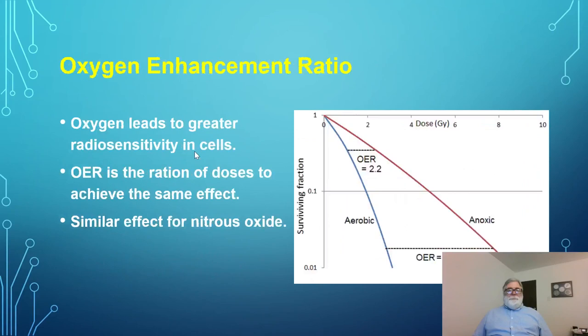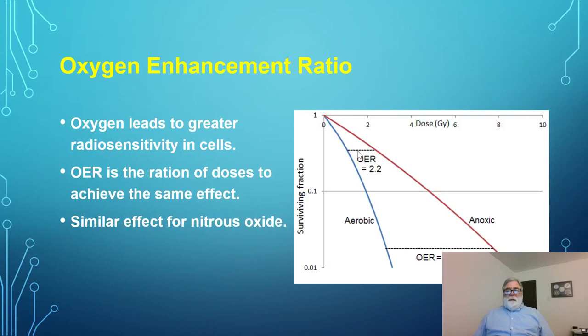Oxygen enhancement ratio, or OER: if you put cells in an anoxic environment where they're not exposed to oxygen, they will be less damaged than cells that have oxygen present. The difference in dose for the same effect between no oxygen and high oxygen is called the oxygen enhancement ratio. The more damage you use as your endpoint, the higher the OER is. It has also been observed that nitrous oxide produces similar effects. The key point is that oxygenated cells are more sensitive to radiation than cells that are not oxygenated.